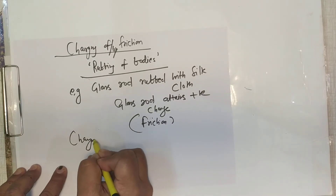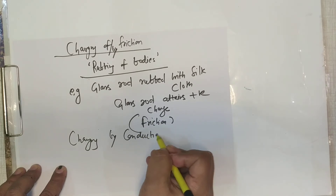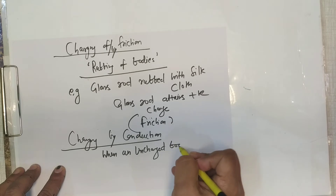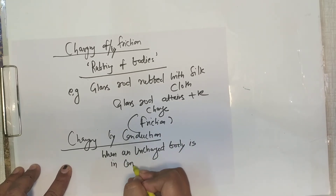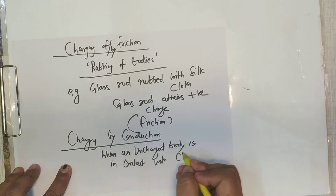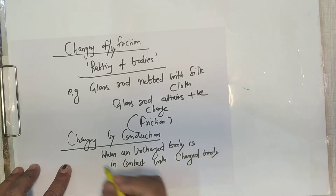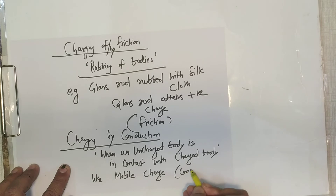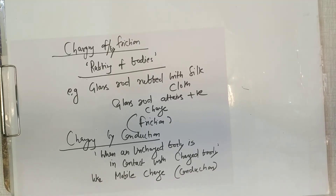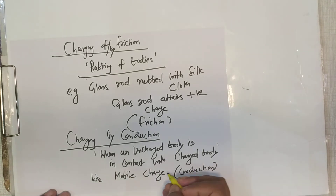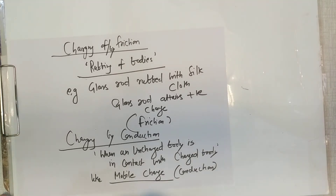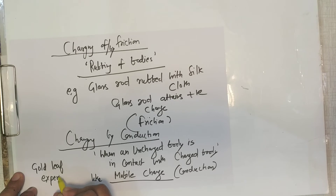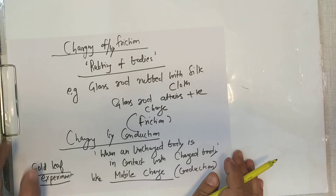Charging by conduction occurs when an uncharged body is placed in contact with a charged body. For example, mobile charging — when you directly connect it — is a conduction method. In the gold leaf experiment, touching the leaves transfers charge to them. That is charging by conduction.